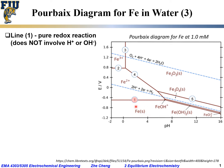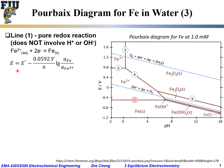You see this line separates solid iron below at a lower, more negative potential versus iron 2+ at a more positive potential. So the electrochemical half-cell reaction would be: Fe²⁺ combined with two electrons to form Fe solid. This would be the electrode or redox half-cell reaction.